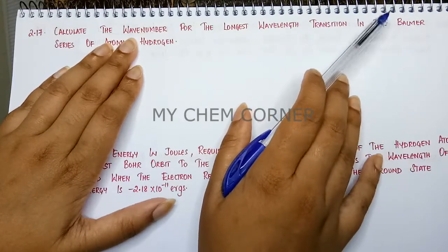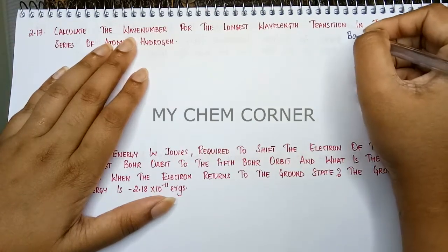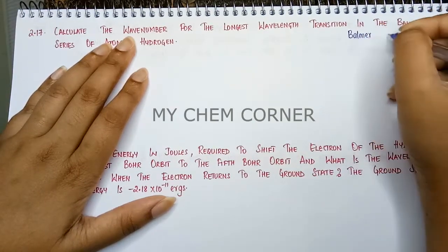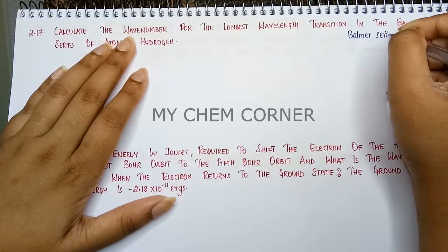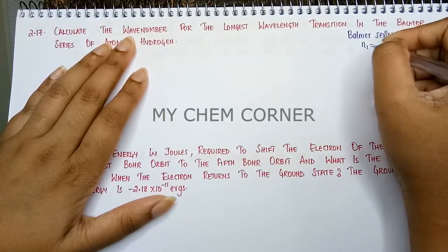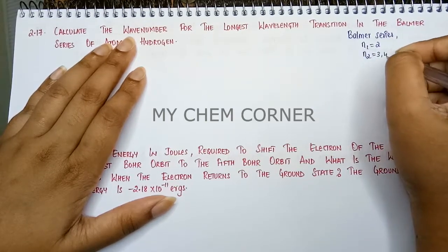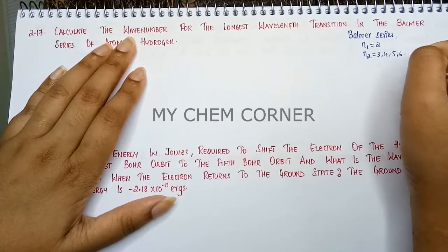When you are telling it is Balmer series, for Balmer series you will have N1 and N2 values. So Balmer series N1 is going to be 2 and N2 is going to be 3, 4, 5, 6 and so on.